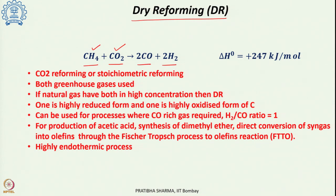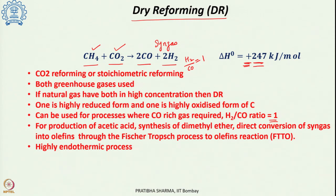Methane is a highly reduced form of carbon while carbon dioxide is a highly oxidized form; they react together to give syngas. The H2/CO ratio in dry reforming is ideally 1, but can be less than 1 under certain conditions. The reaction's delta H value is positive, indicating it is endothermic — and even more endothermic than the steam methane reforming reaction.